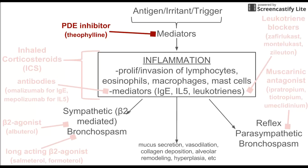Another drug class we can use are phosphodiesterase inhibitors, including caffeine and theophylline. These block mediators that cause inflammation and allow for the buildup of cyclic AMP. Cyclic AMP has a couple of roles: it enhances the beta-agonist activation pathway downstream in the G-protein pathway, and it also prevents degranulation of mast cells, which further reduces inflammation.